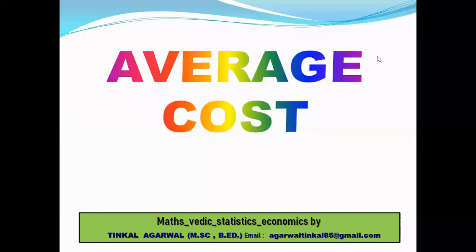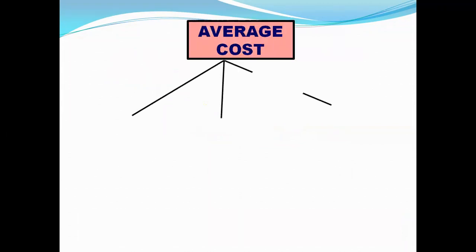Hello students, once again welcome back to my channel. In this video I will share a very important chapter of microeconomics: average cost. Suppose a producer produces five units of a good and the total cost of producing it is 1000. Average cost will be 1000 by 5 — that is total cost divided by the quantity of output produced. So 1000 by 5 is 200, so 200 will be the average cost.